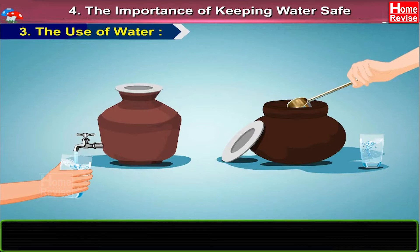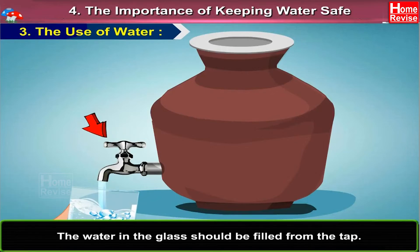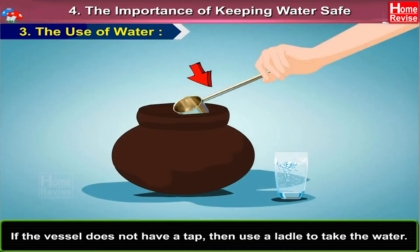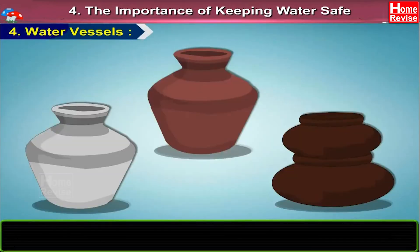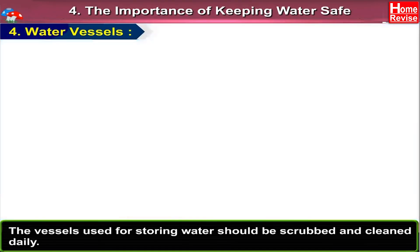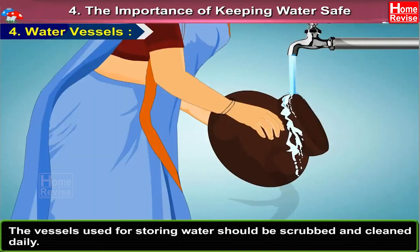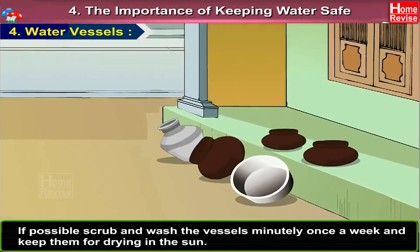Method 5: The Use of Water. The water vessel should have a tap. The water in the glass should be filled from the tap. If the vessel does not have a tap, then use a ladle to take the water. Do not hold the glass with your fingers and dip it in the vessel. The vessels used for storing water should be scrubbed and cleaned daily. If possible, scrub and wash the vessels minutely once a week and keep them for drying in the sun.